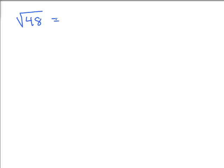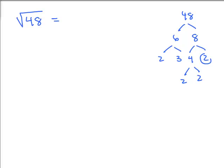Let's say you just couldn't think of a perfect square factor of 48 — you could always make a factor tree to prime factor it. For example, 48 is 6 times 8, that's 2 times 3 and 8 is 4 times 2, which is 2 times 2. Circling all the leaves, you've got four factors of 2 and a factor of 3.